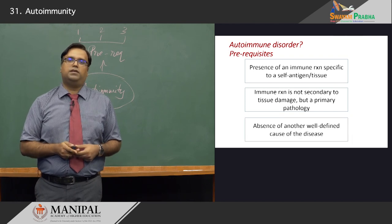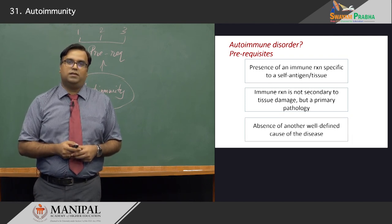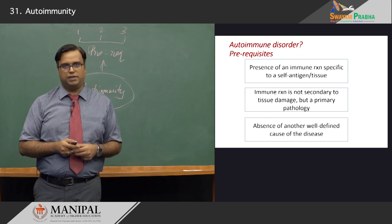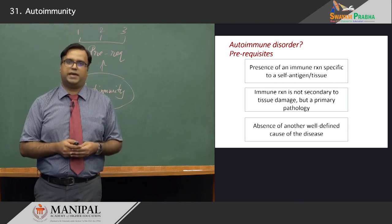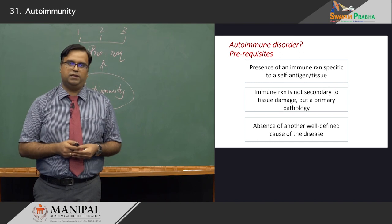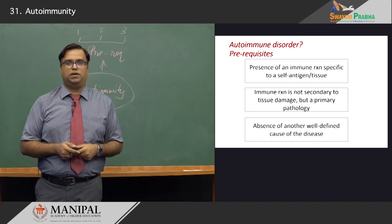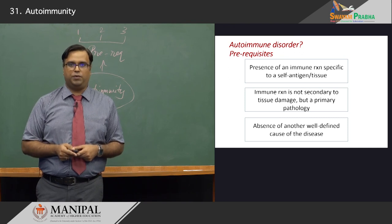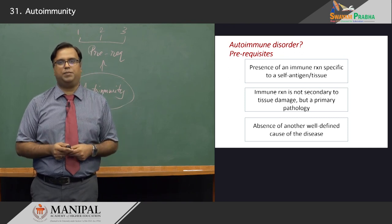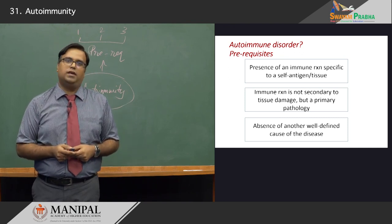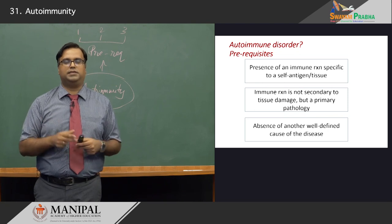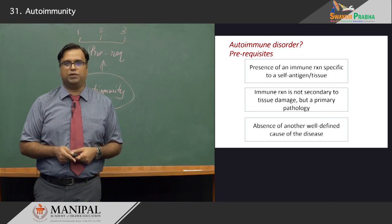The third important cog in the wheel is to rule out the absence of other well-defined causes of the disease. There are a host of other conditions which can cause secondary autoimmunity — those are not autoimmune disorders. You need to have a more detailed idea about that. Having met all of these three prerequisites, you may have entered the territory of autoimmune disorders.